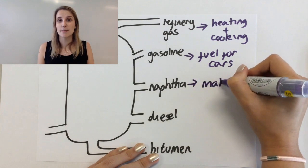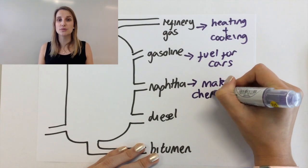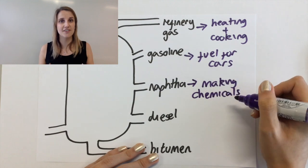The third one is something called naphtha, which is used to make other chemicals and is used as a feedstock.